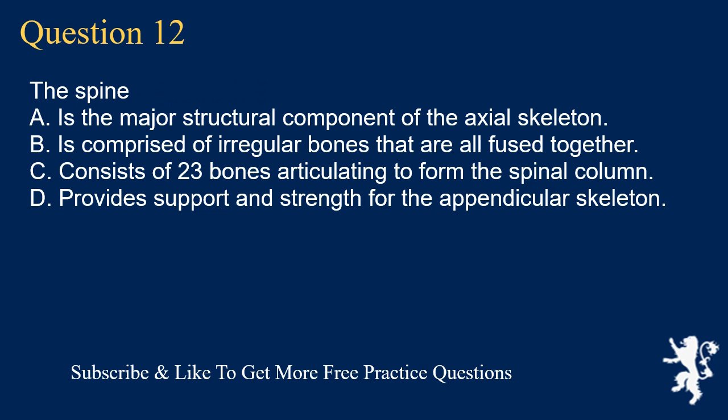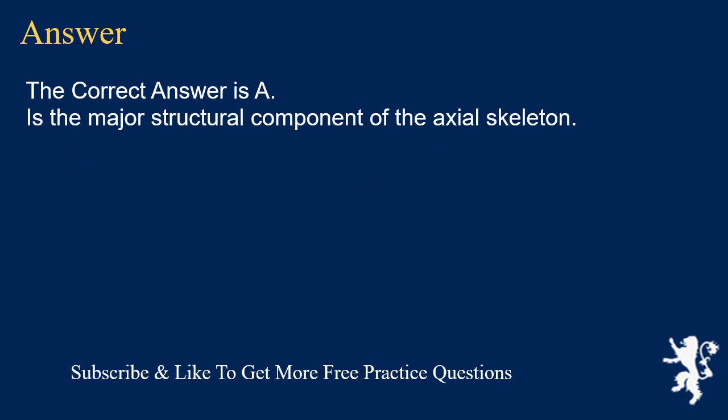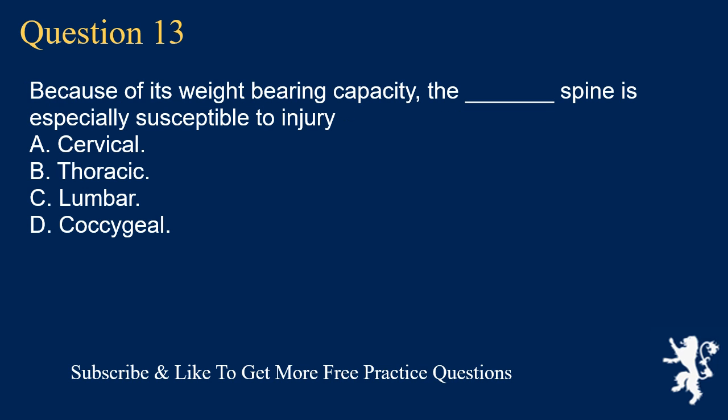Question 12. The spine: A. Is the major structural component of the axial skeleton. B. Is comprised of irregular bones that are all fused together. C. Consists of 23 bones articulating to form the spinal column. D. Provides support and strength for the appendicular skeleton. The correct answer is A. Is the major structural component of the axial skeleton.